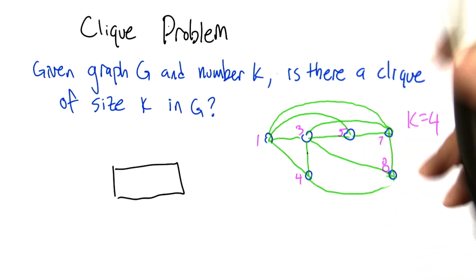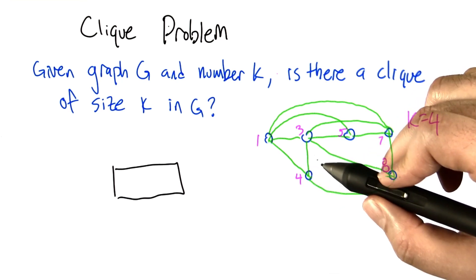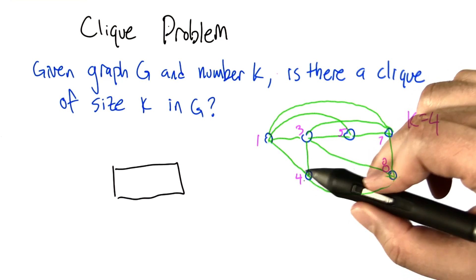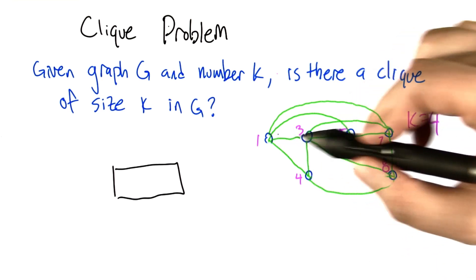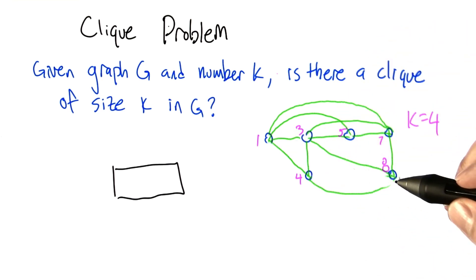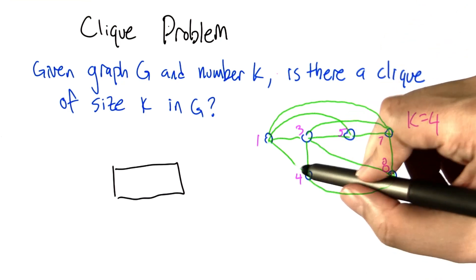Let's take a look at node 4. So node 4 has the property that it has exactly a degree of 3. So if 4 is part of the clique, then its neighbors have to be the rest of the clique: 1, 3, and 8. But you notice that 1 and 8 are not connected to each other. So 4 can't be part of a 4 clique.